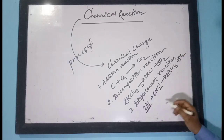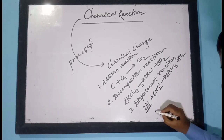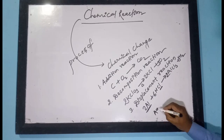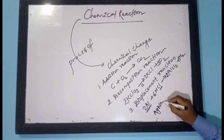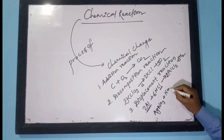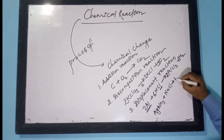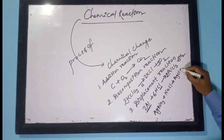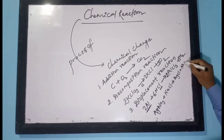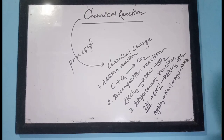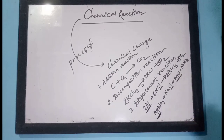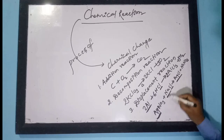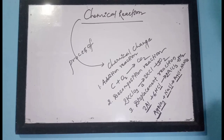Let us see another example: AgNO₃ reacts with NaCl. In this reaction, Ag is displacing Cl to form AgCl, and Na is displacing NO₃ to form NaNO₃.